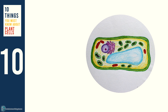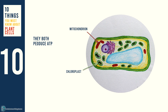In plant cells, both mitochondria and chloroplasts can produce ATP. But the energy used to produce ATP in mitochondria comes from the respiratory substrate such as glucose, and the energy used to synthesize ATP in chloroplasts comes from light.